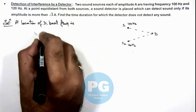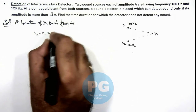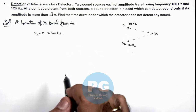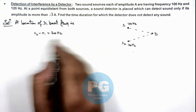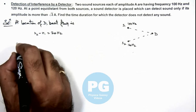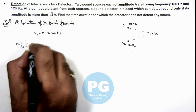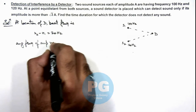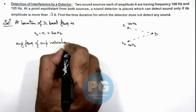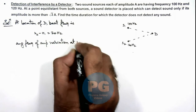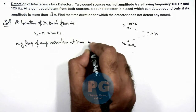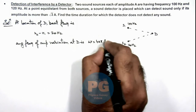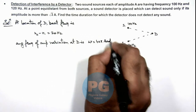The beat frequency is N2 minus N1, that is equal to 20 Hz, as these are 120 and 100 Hz. So if this is the beat frequency, then the angular frequency of amplitude variation at the detector is ω = 2π × 20 = 40π radians per second.